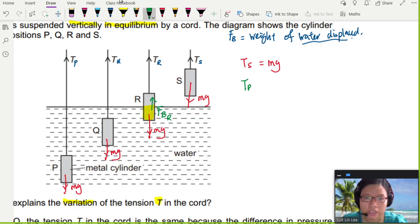So in this case, I can say the upward force TR plus the other upward force, buoyancy force at R, is equal to mg. So immediately, you can tell that TR will be equal to mg minus the buoyancy force of R.